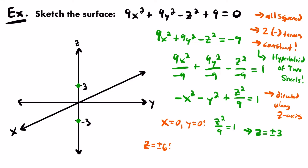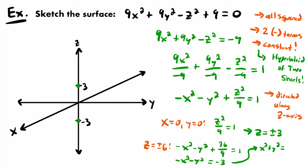We have a circle x² + y² = 3 with radius √3 ≈ 1.7. We draw that circle at z = 6 and z = -6. Label z = 6 and z = -6 on the z-axis, then at each point draw a projection of the xy-plane — a new y-axis and x-axis. Label the radius 1.7 in each direction for both positive and negative x and y. Draw a circle up at z = 6 and another circle down at z = -6.